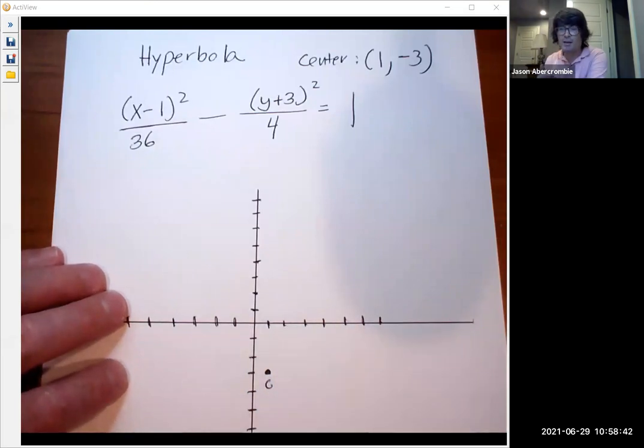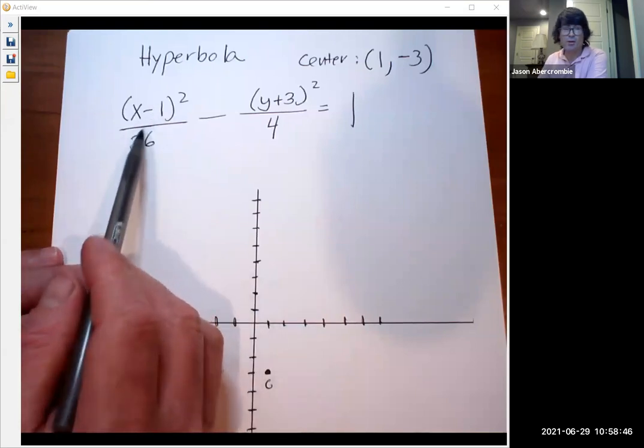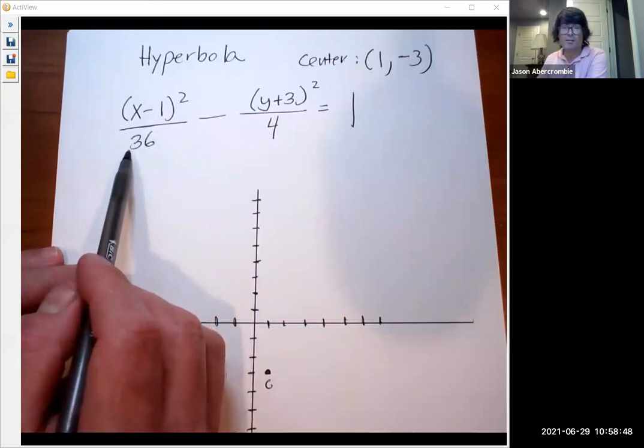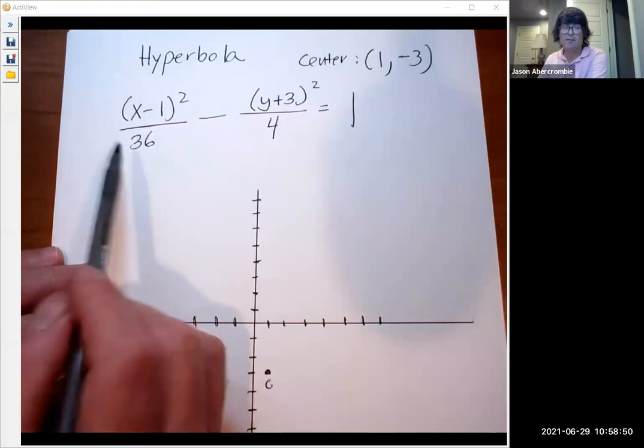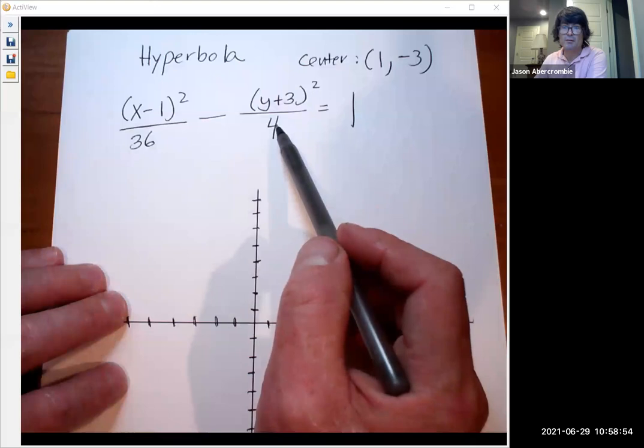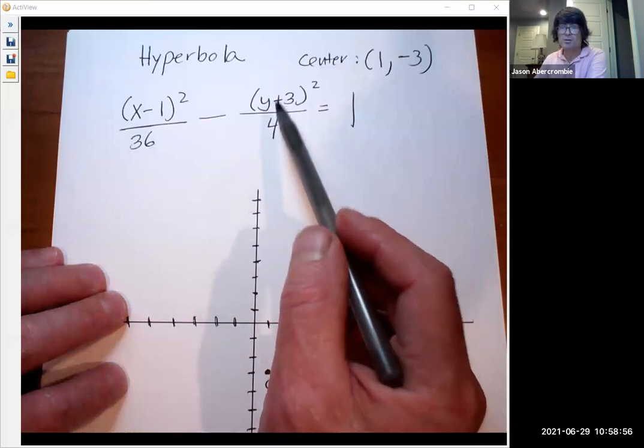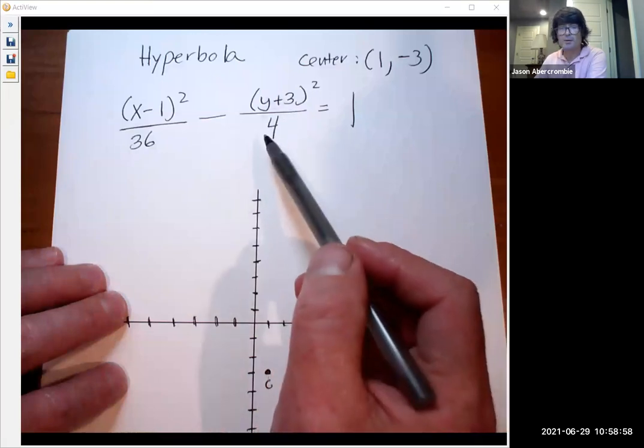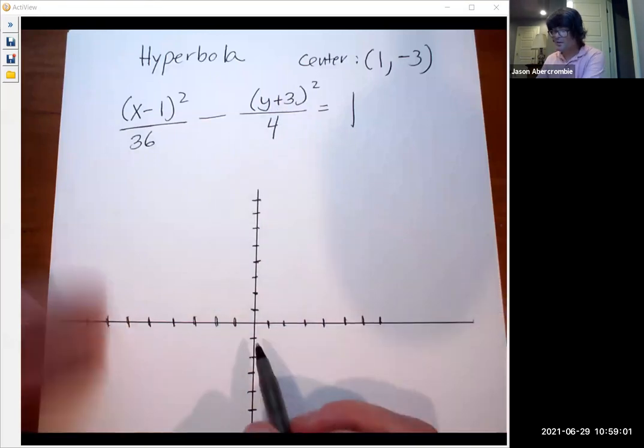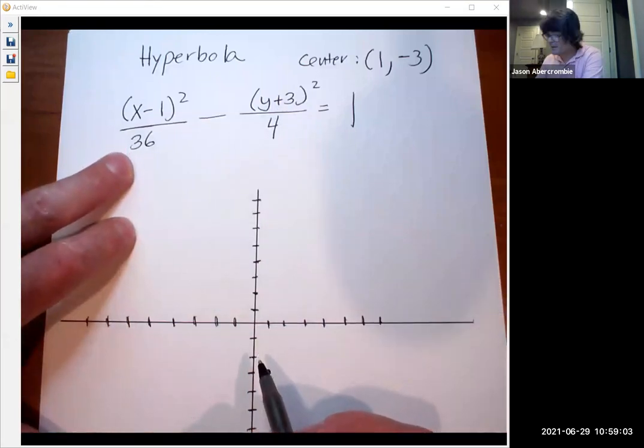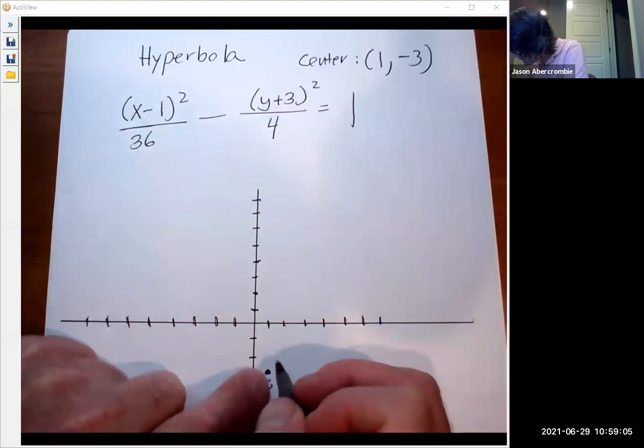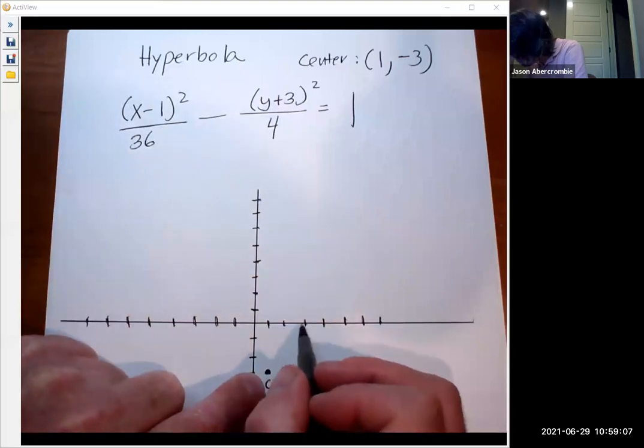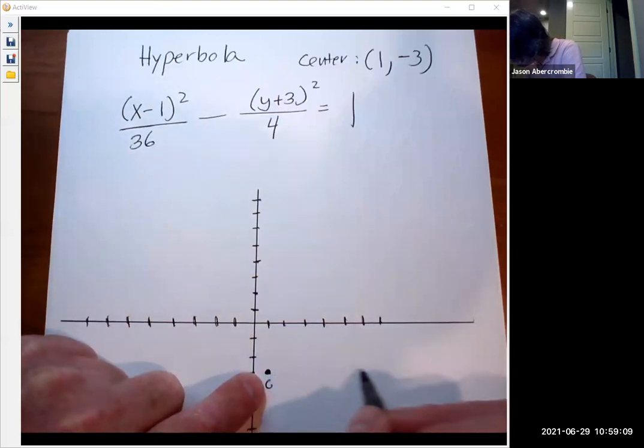So now to make my asymptotes correct, I'm going to look at the x and see that we have 36 underneath it. The square root of 36 is how far we go left and right from the center. And then over here we have a 4 under the y term. The square root of four or two is how far we go up and down from the center. So watch this. We're going to go six left and right. I'm just going to go six. One, two, three, four, five, six. We're going to go all the way over here. I'm going to put just a tiny little dot.